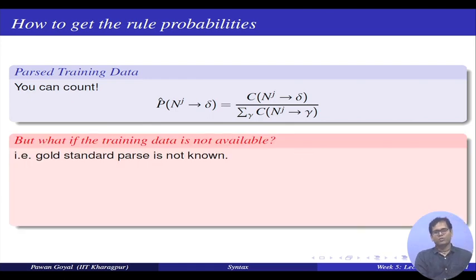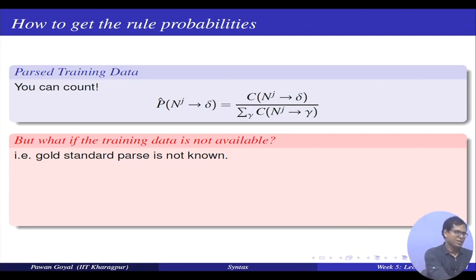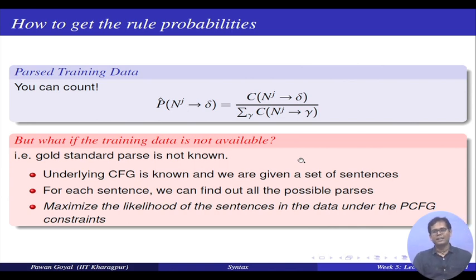But what about the case where the training data is not labeled? That is, I have no way to find out which rule has been used in a given sentence. What is given to us is the underlying context-free grammar — all the possible rules — but not the probability for each individual rule. I am given a lot of sentences and the grammar that can generate them, but not the rule probabilities. The task is: how do I find out these rule probabilities — in other words, how do I find the parameters of my PCFG?